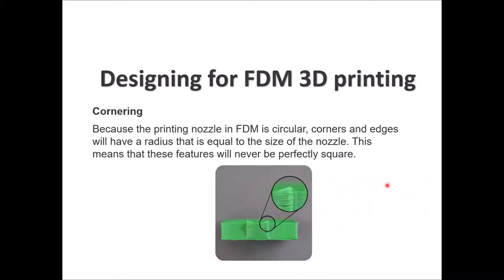Another problem in FDM printed designs is cornering. The printing nozzle of FDM is circular, so corners and edges will have a kind of radius — they will not have a sharp edge because the layer being printed has a curvature. This radius equals the size of the nozzle, which means features will never be perfectly squared. As we can see, the surface corners are somewhat rounded rather than sharp.